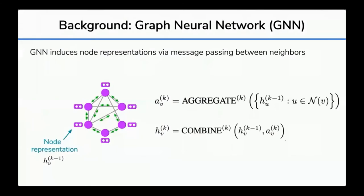Next, let me briefly introduce Graph Neural Networks (GNNs). The basic idea of GNNs is to update the representation or embedding of each node of a graph by letting neighboring nodes send message vectors to each other. Concretely, at node V with current representation H_V^(k-1), the update rule is to take the representations of neighbor nodes U and aggregate them to get a total message A — such as taking a summation — and then update the representation of node V by combining H and A, where the combination function could be a linear transformation. In this way, GNNs learn better representations of nodes. We will use graph neural networks to induce representations on knowledge graphs later in this talk.